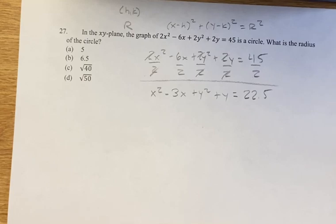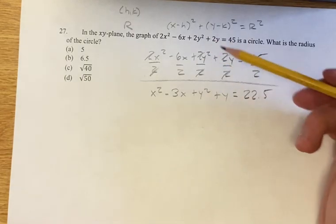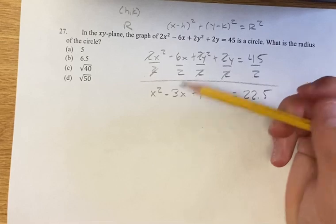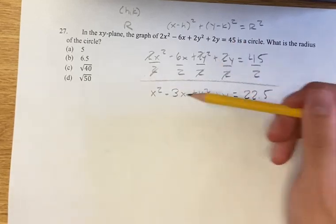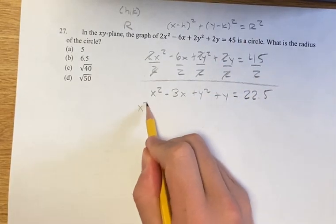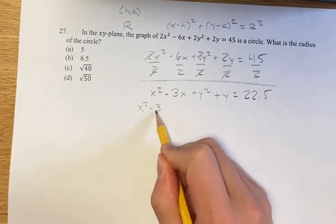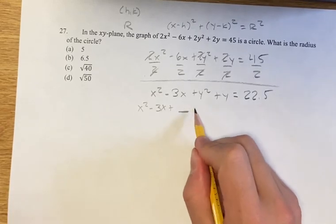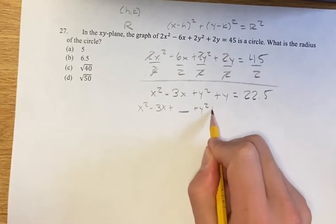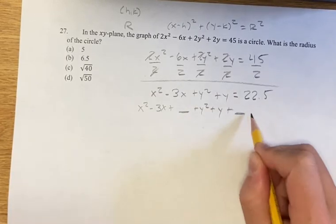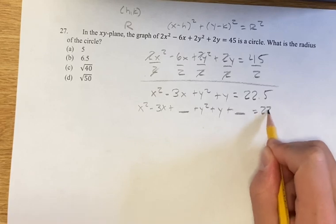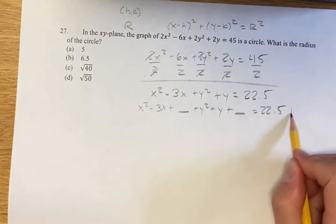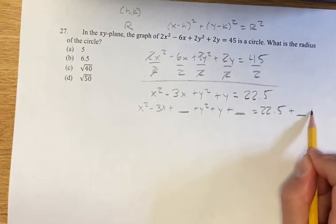Now we have a situation where we can complete the square for x and for y. We're going to have x squared minus 3x plus some number, plus y squared plus y plus some number, equals 22 and a half. To keep things equal, we have to add these same amounts to both sides.